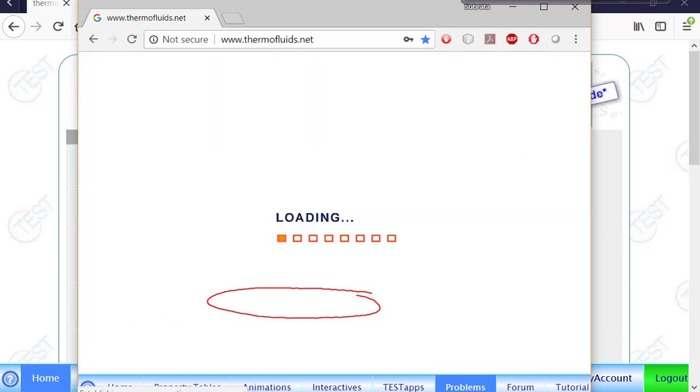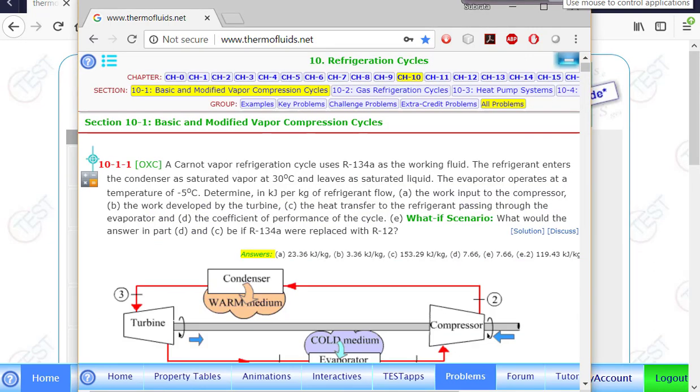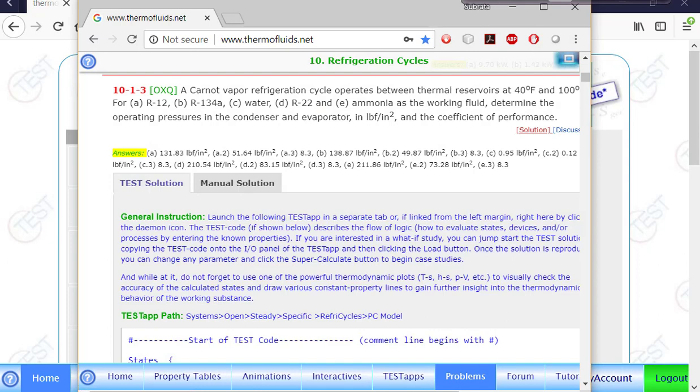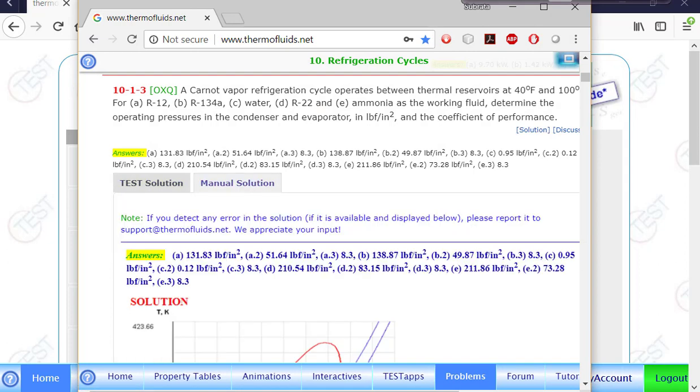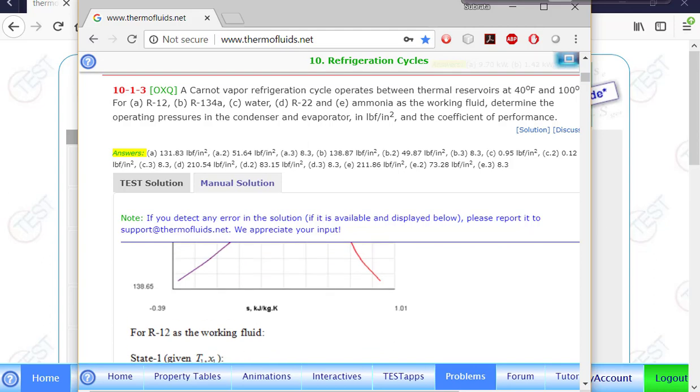Suppose you go to any problems in any chapter, say chapter 10, the refrigeration problem, and you want to take a look at this particular solution. By clicking on the manual solution, the PDF file shows up here. You can download or print that out.